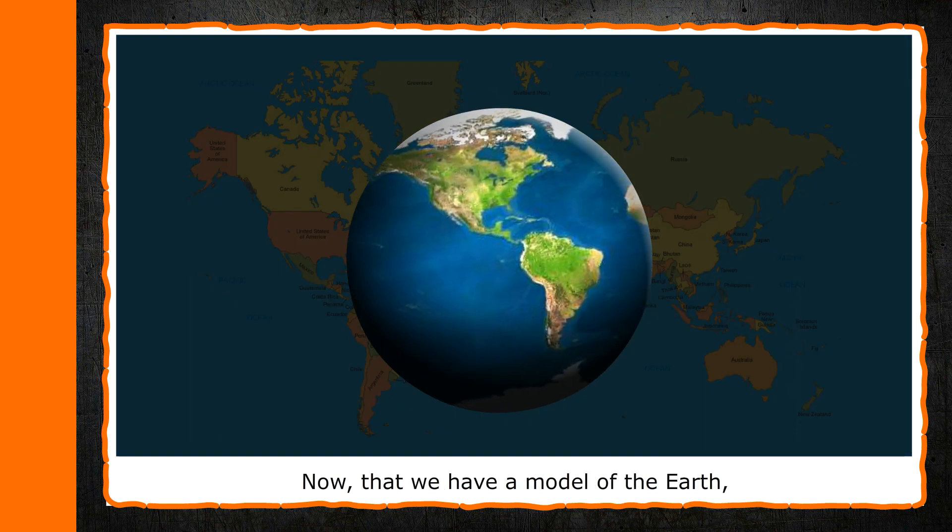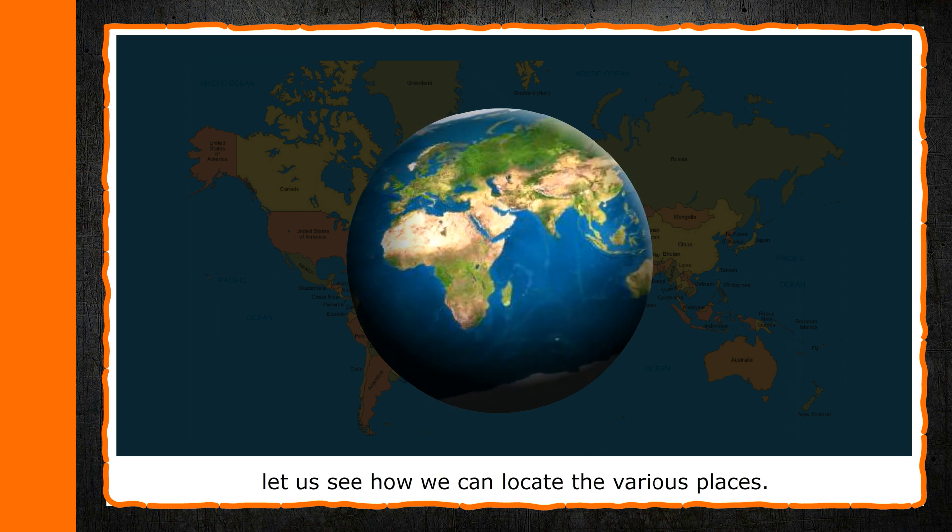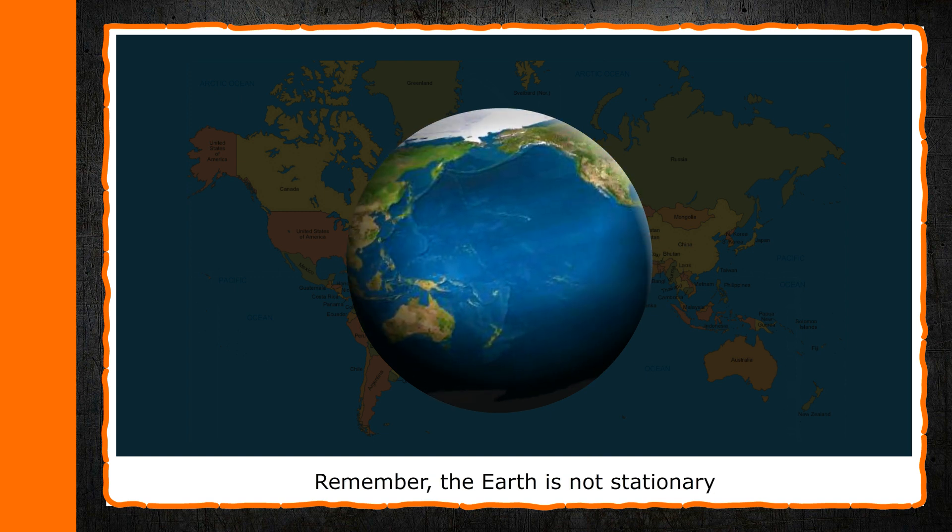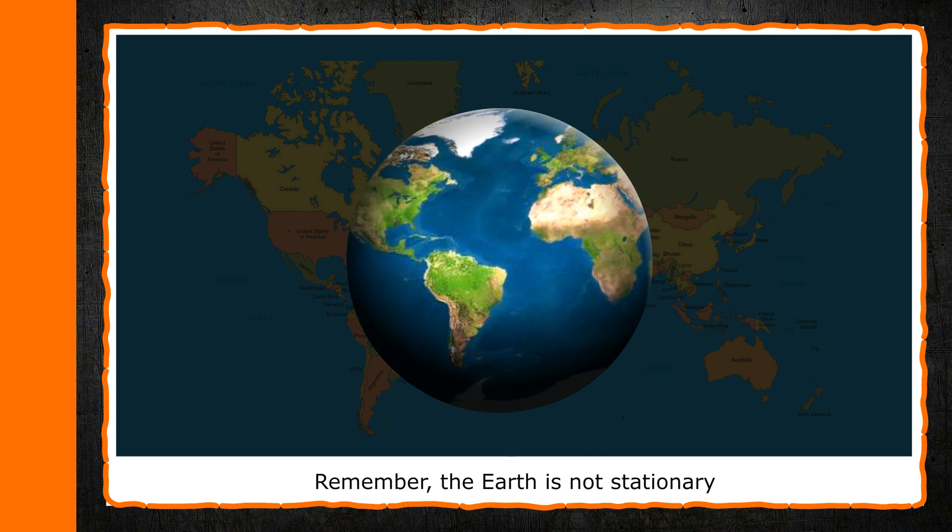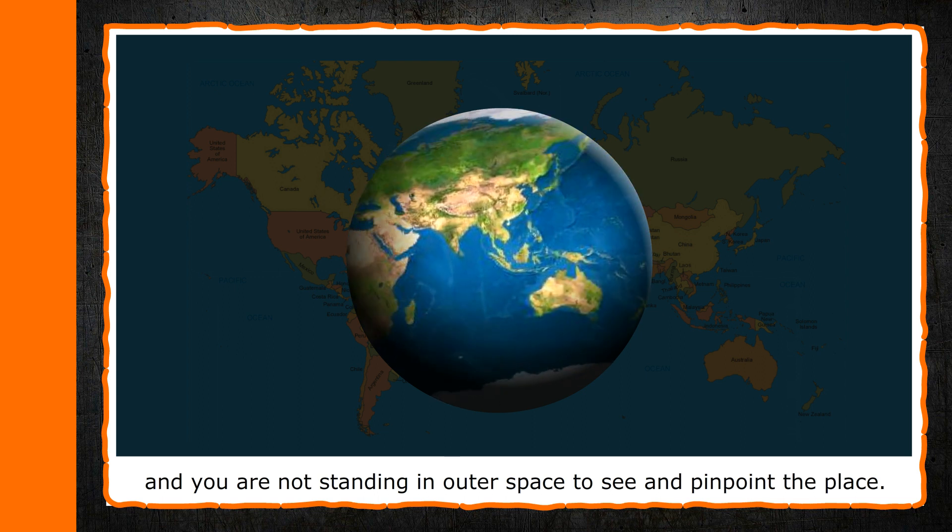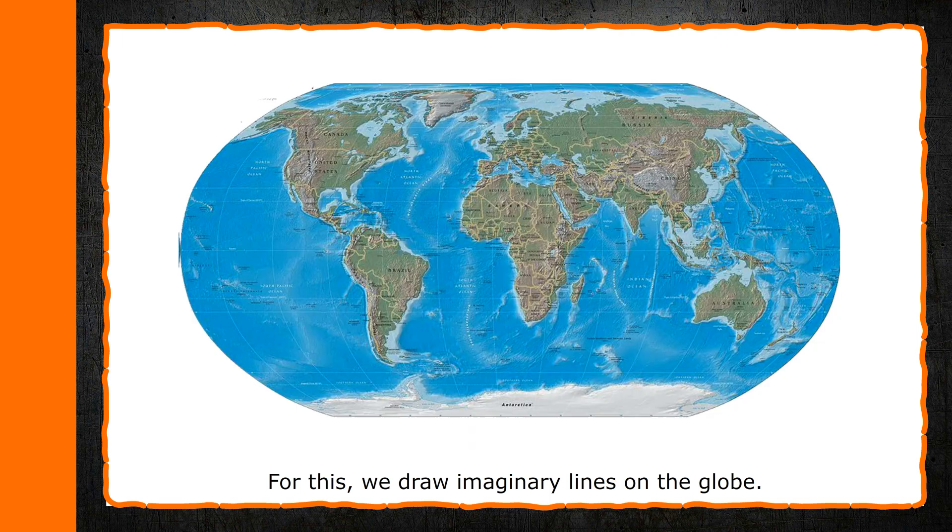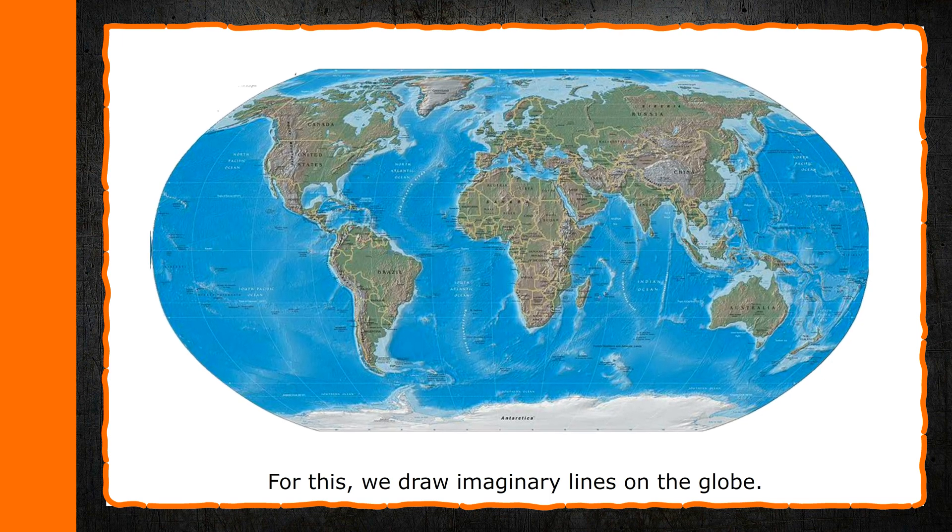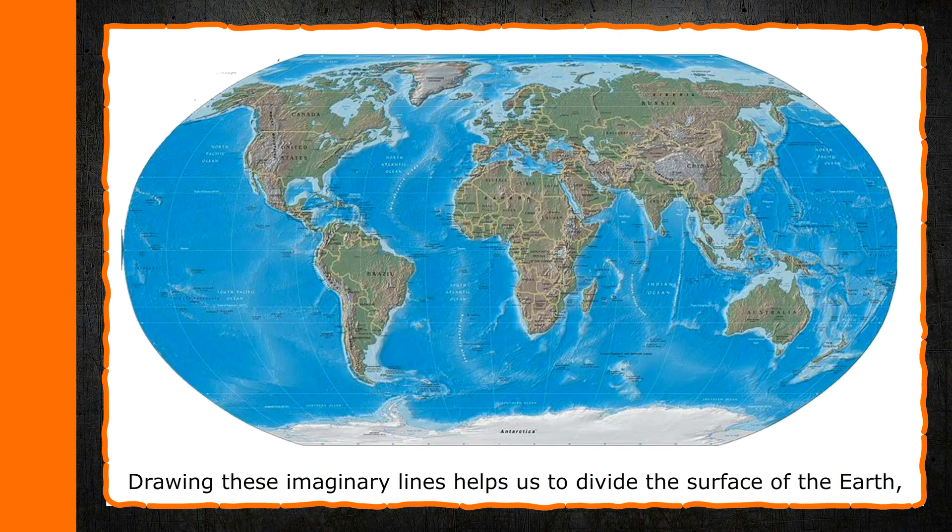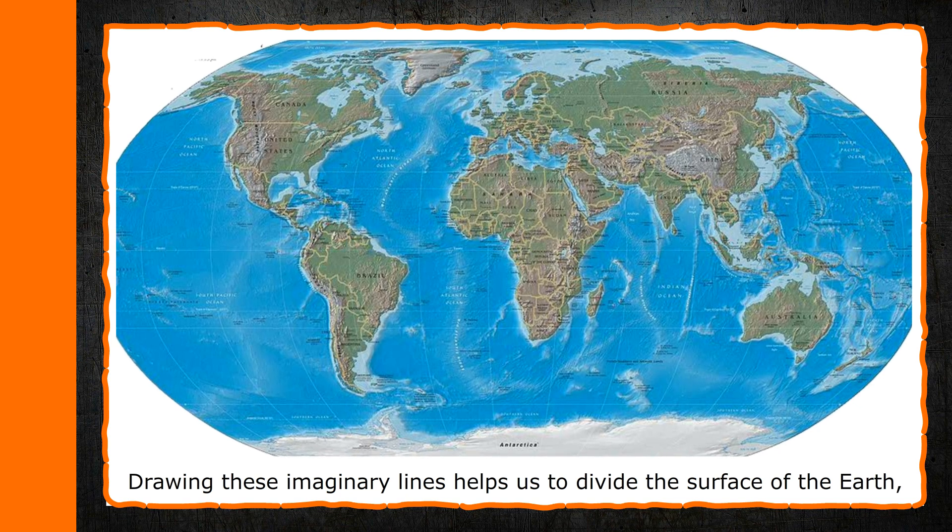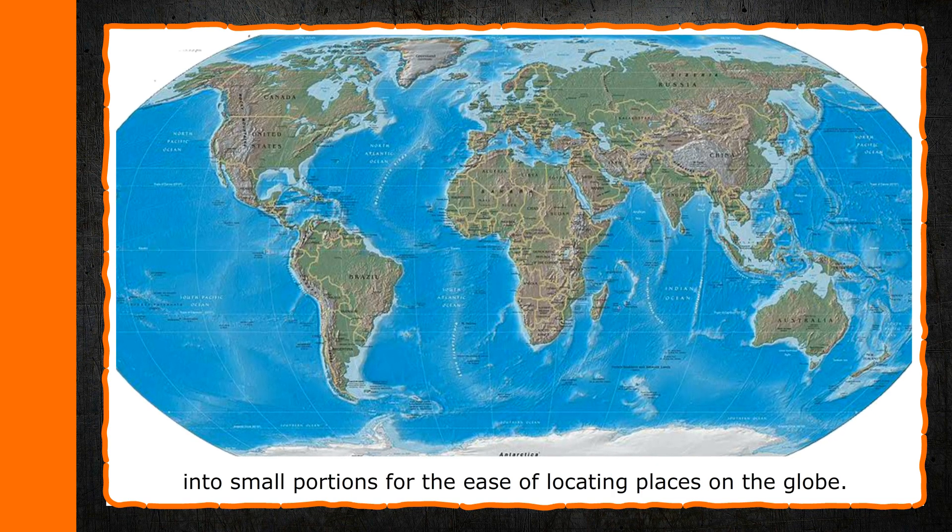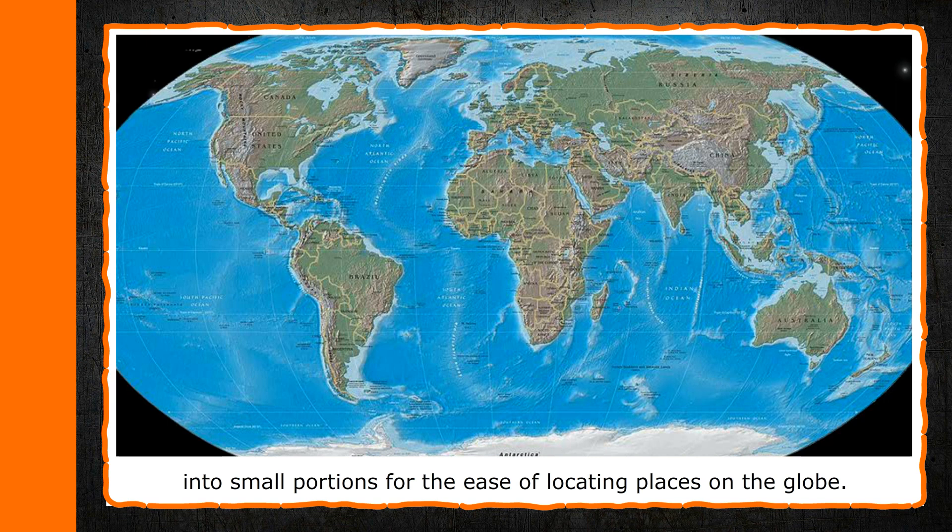Now that we have a model of the earth, let us see how we can locate the various places. Remember, the earth is not stationary and you are not standing in outer space to see and pinpoint the place. For this, we draw imaginary lines on the globe. Drawing these imaginary lines helps us to divide the surface of the earth into small portions for the ease of locating places on the globe.